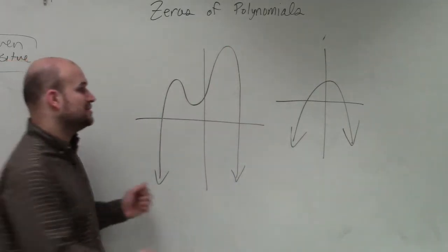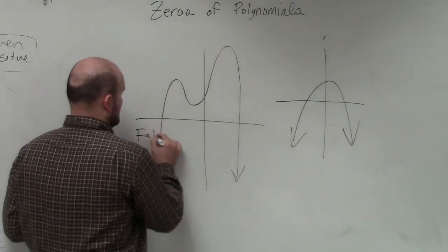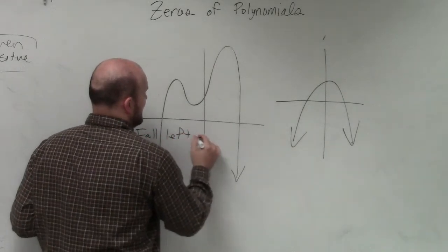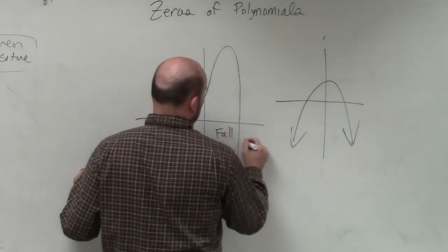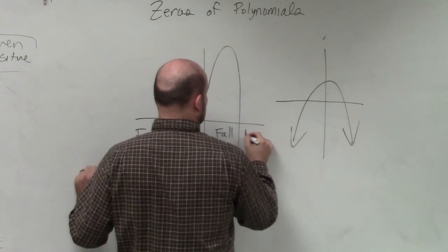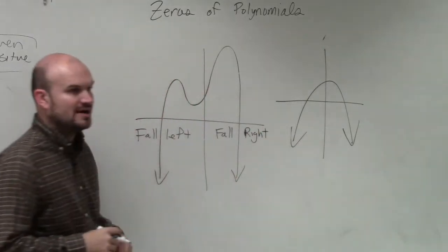So all you needed to do for these problems is go and look at your notes and say, what is the degree and the leading coefficient when the graph falls left and falls right? Because I showed you graphs that look like this, but it doesn't matter what the graph looks like.